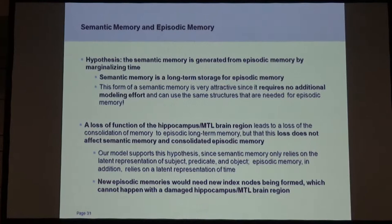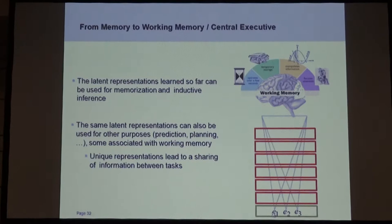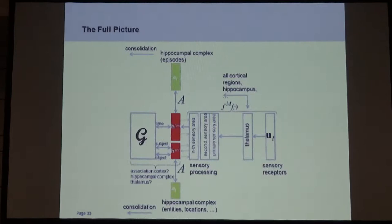We also have famous cases of people with damage to their hippocampal area who lose the ability to form new memories — which completely agrees with our assumption that indices are formed in the hippocampus. If no more indices are formed, you cannot store any more episodic memories. We also argue that these latent representations are not just useful for memory and inductive inference, but also for other applications like prediction and planning — some of these functionalities are associated with working memory. If you have a unique representation for an entity in your brain, you get sharing of information between different tasks — if Halle Berry is activated, all these things get activated, and this whole pattern will be useful for different tasks.